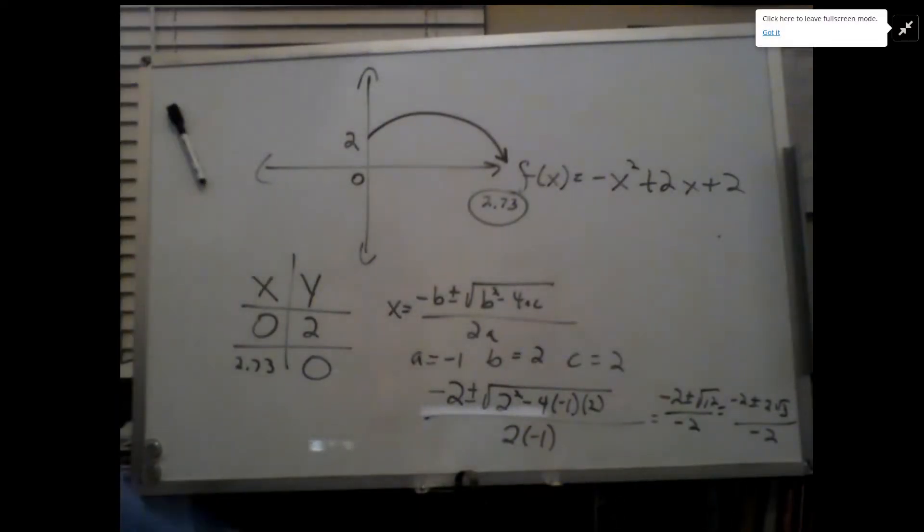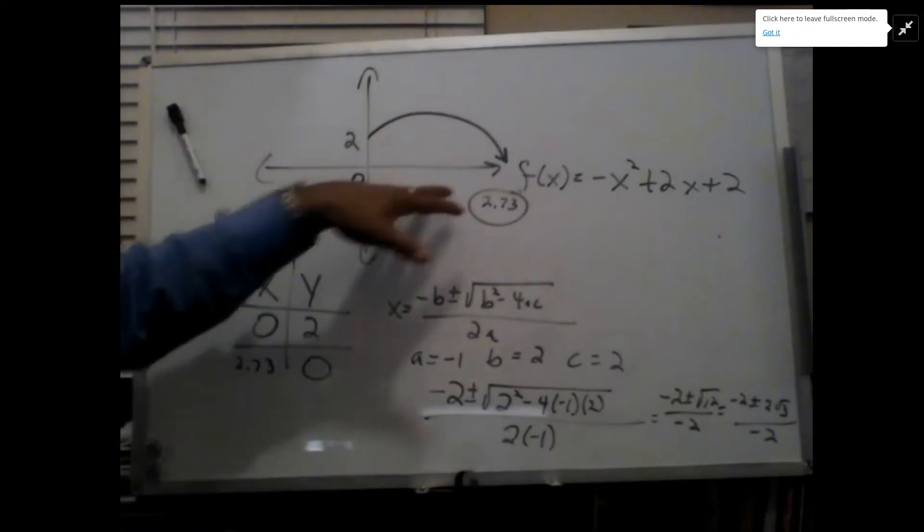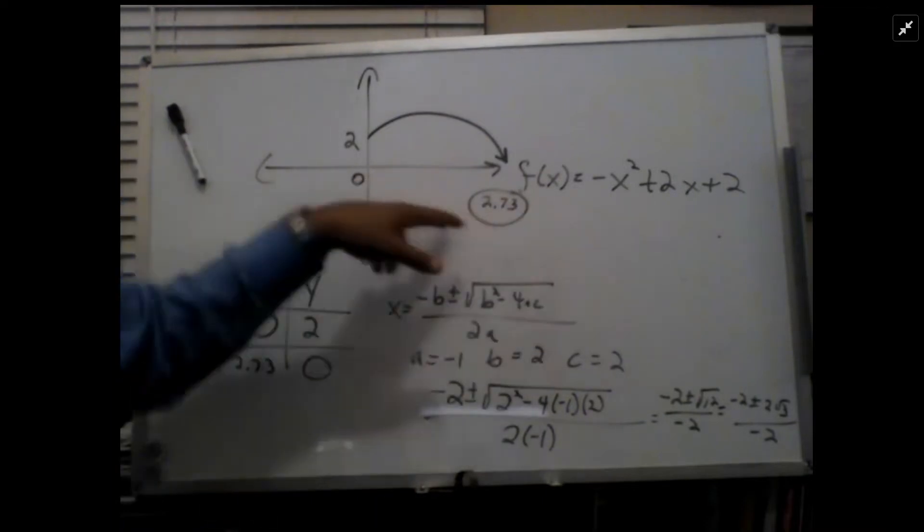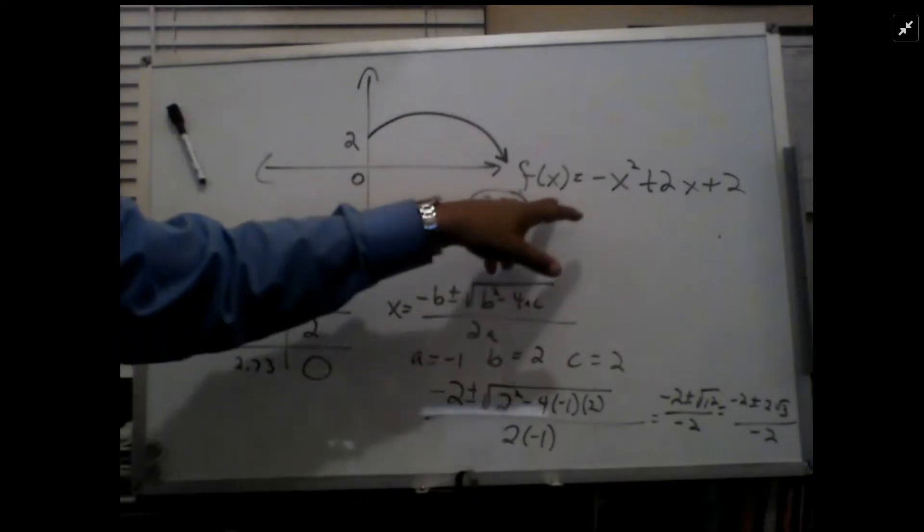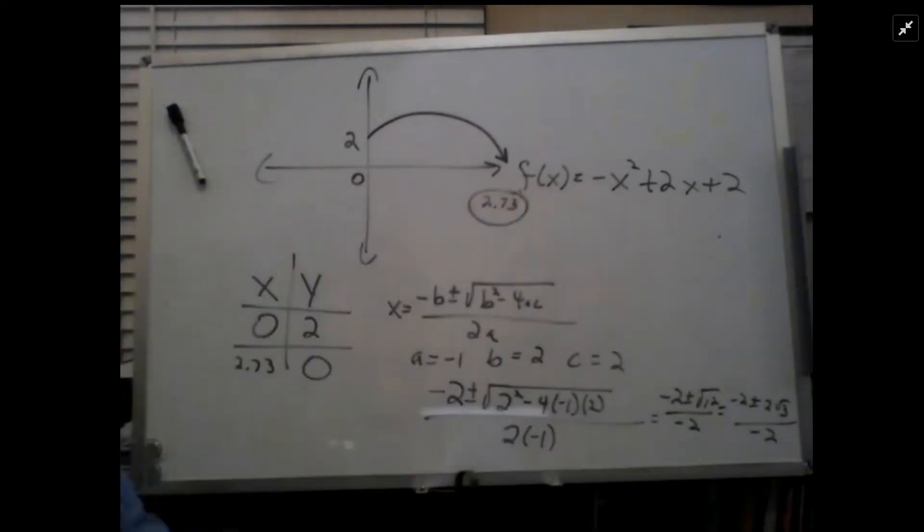This is Professor Russell Wilson. This is for maximum horizontal distance of this projectile with the function negative x squared plus 2x plus 2.